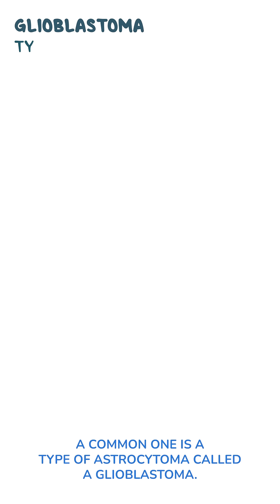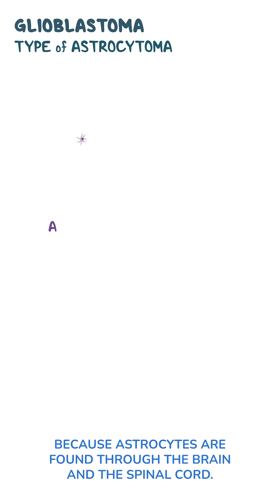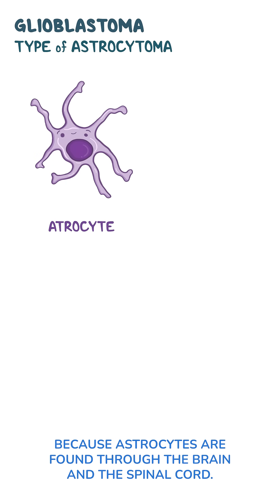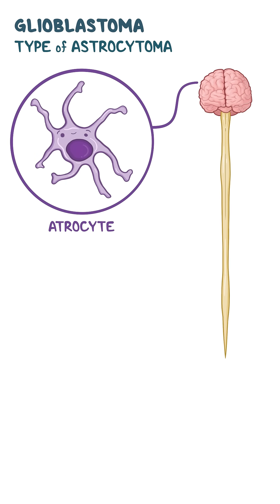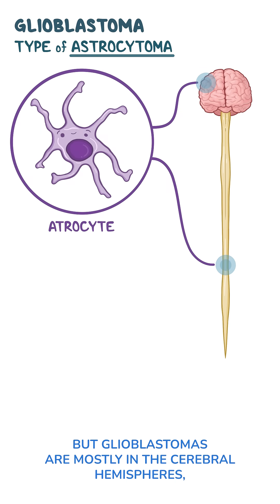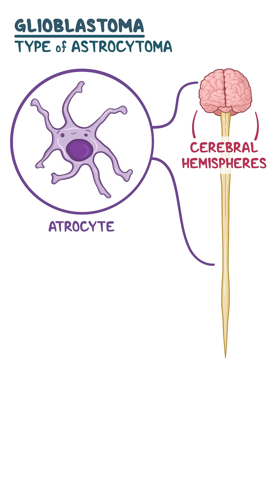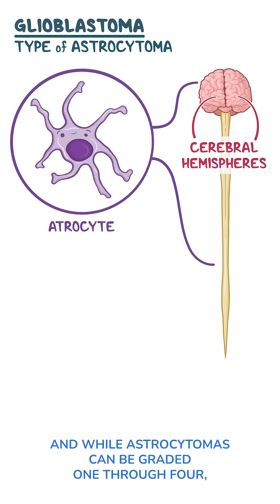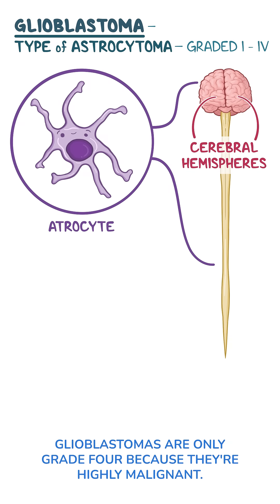A common one is a type of astrocytoma called a glioblastoma. Because astrocytes are found throughout the brain and the spinal cord, astrocytomas can form in all of these locations, but glioblastomas are mostly in the cerebral hemispheres. And while astrocytomas can be graded 1 through 4, glioblastomas are only grade 4 because they are highly malignant.